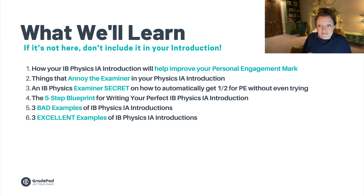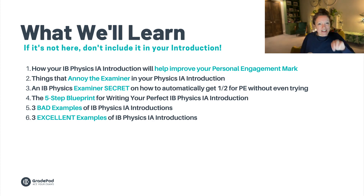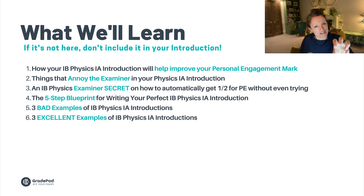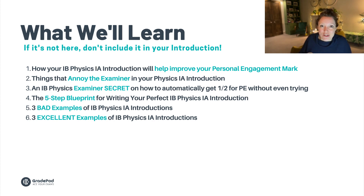So what are we going to learn today? We're going to learn five or six different points. First, how your IB Physics IA introduction will help you improve your personal engagement mark. Second, things that annoy the examiner. Third, a secret from the IB examiners on how to automatically get one out of two for personal engagement. Fourth, a five-step blueprint on exactly how to write the perfect IA introduction. Fifth, three excellent examples. And sixth, three terrible examples. By the end of this video, you should have a very clear idea on how to write a concise introduction that helps you towards two out of two for personal engagement.